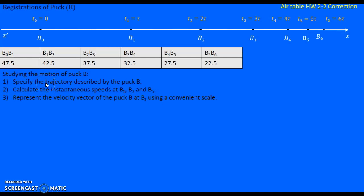Specify the trajectory described by the puck. Calculate the instantaneous speeds at B1, B3, and B5. Represent the velocity vector of the puck B at B1 using a convenient scale.